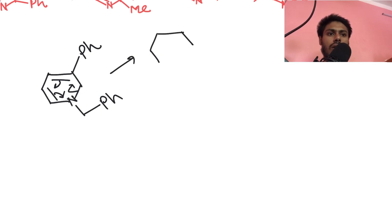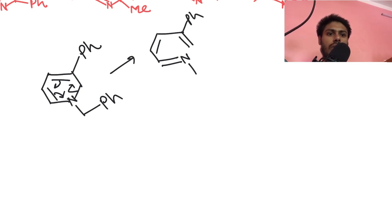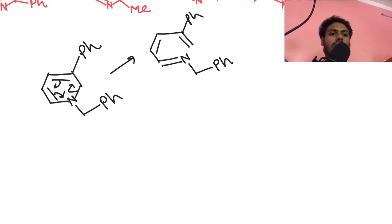You will get a product like this. Here you have this Ph group and here you have this Ph group. This is the product you will get after the electrocyclic ring opening reaction.